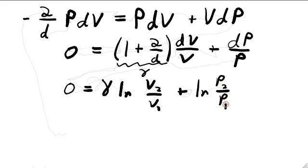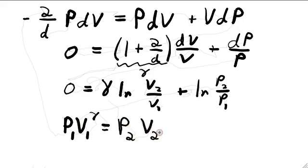From this point, it's just a matter of doing a little bit of algebra to find that the combination P times V to the gamma is a constant in this process. So that P1 times V1 to the gamma equals P2 times V2 to the gamma.